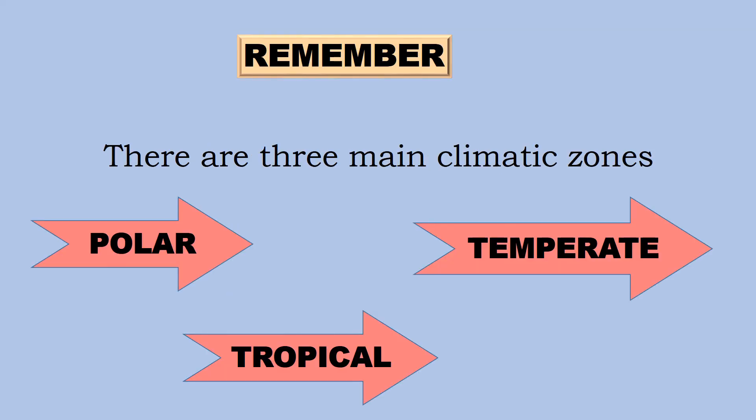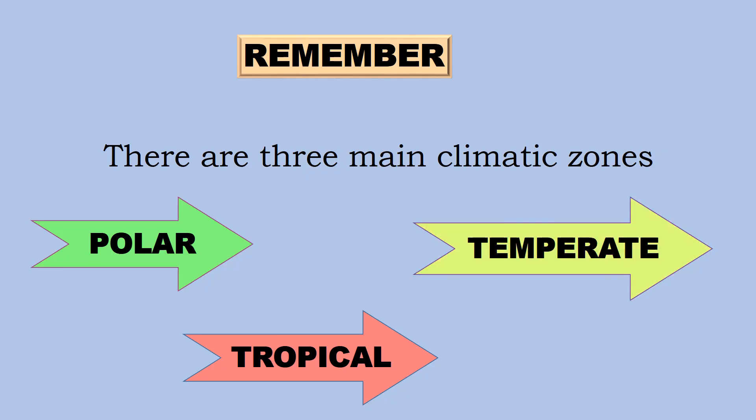Remember, there are three main climatic zones: the polar zones, the temperate zones, and the tropical zone.